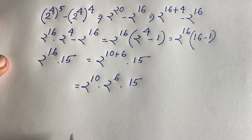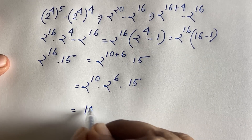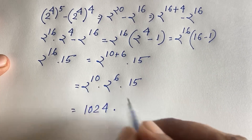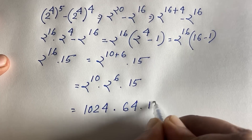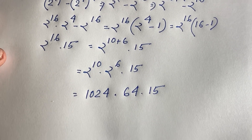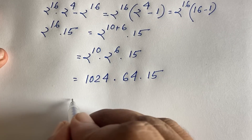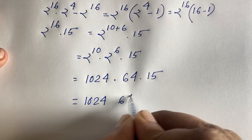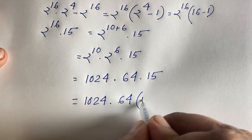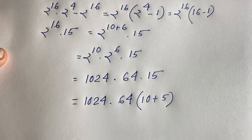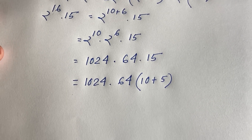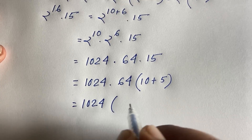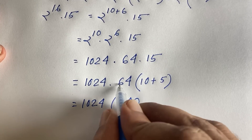Now, 2 to the power 10 equals 1024, and 2 to the power 6 equals 64. So the expression becomes 1024 times 64 times 15. We can write 15 as 10 plus 5, so 1024 times 64 times 15 becomes 1024 times 640.